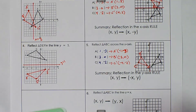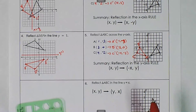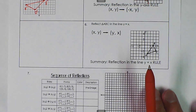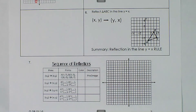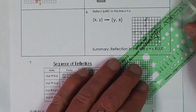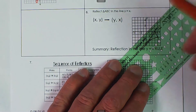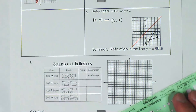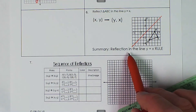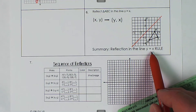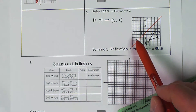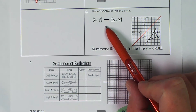Now we want to reflect over the line y equals x. The line y equals x is a diagonal line going right through here. The summary: reflection in the line y equals x is written where (x, y) goes to (y, x).